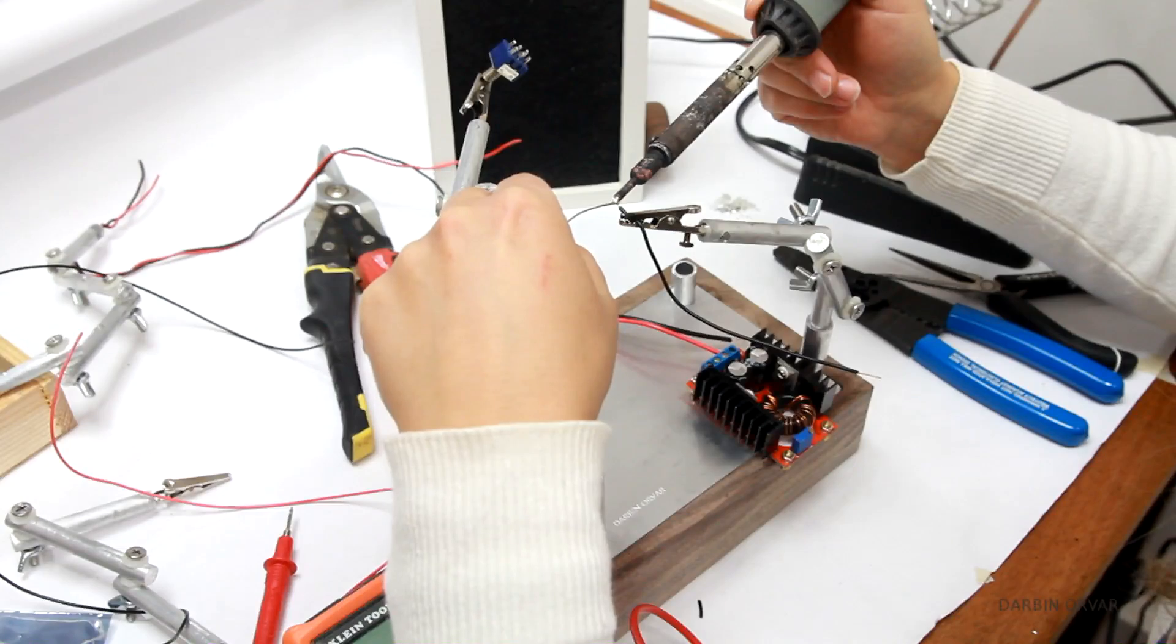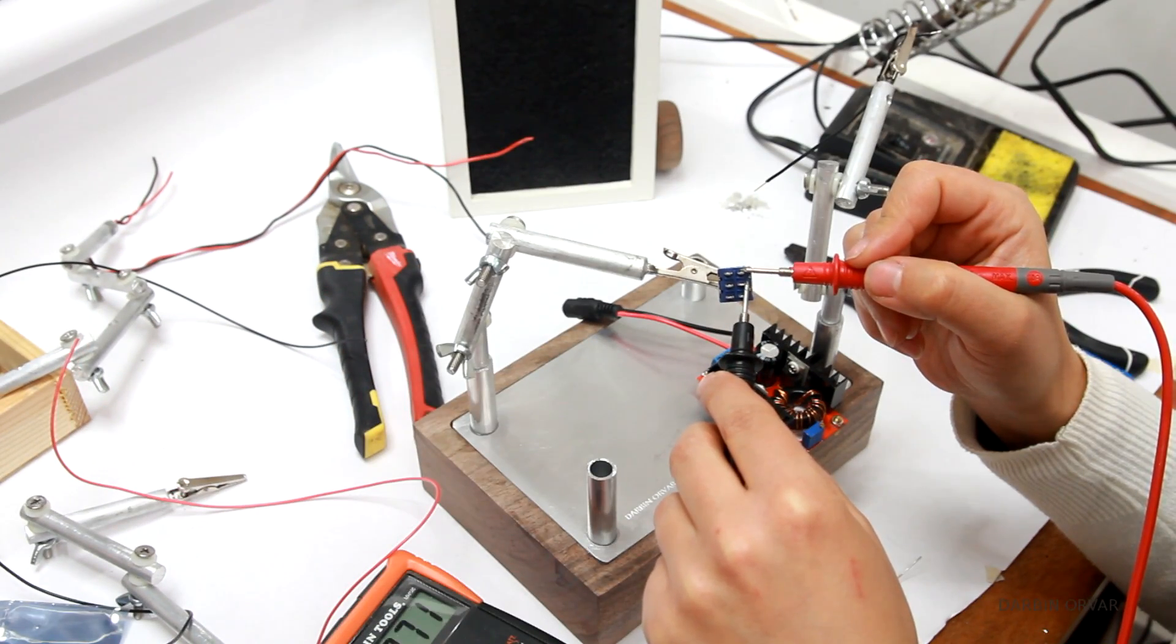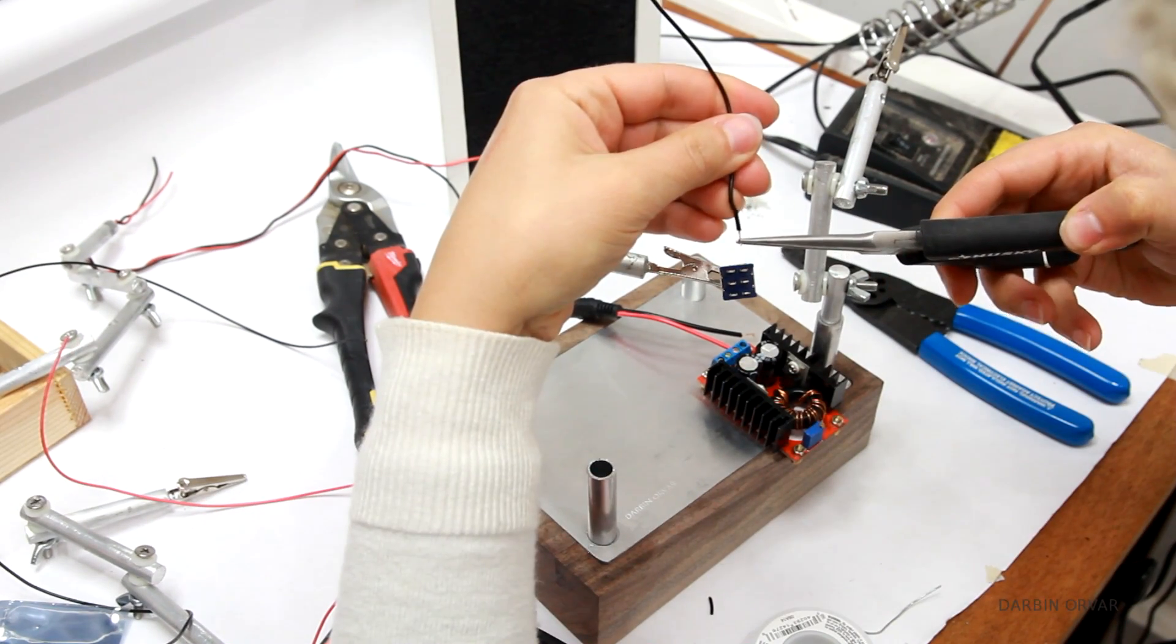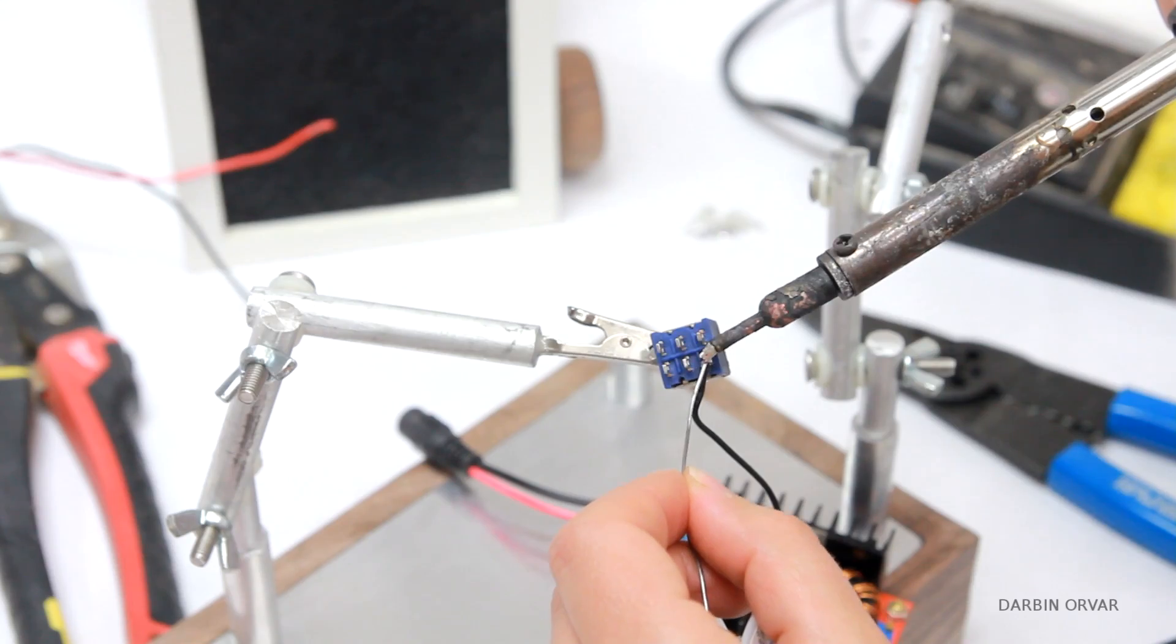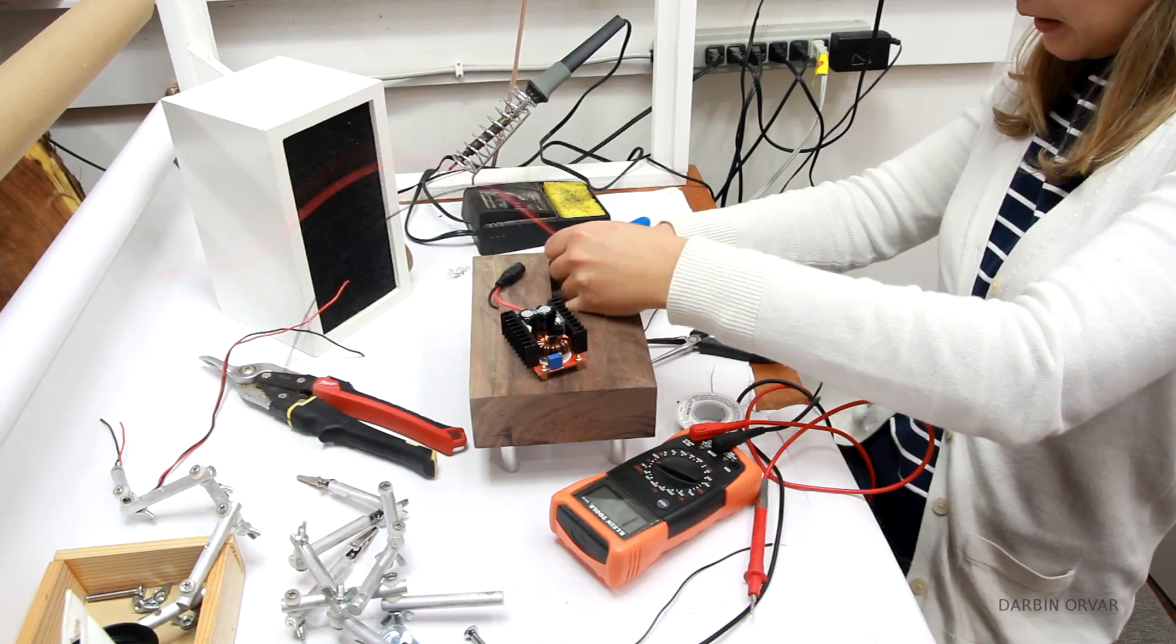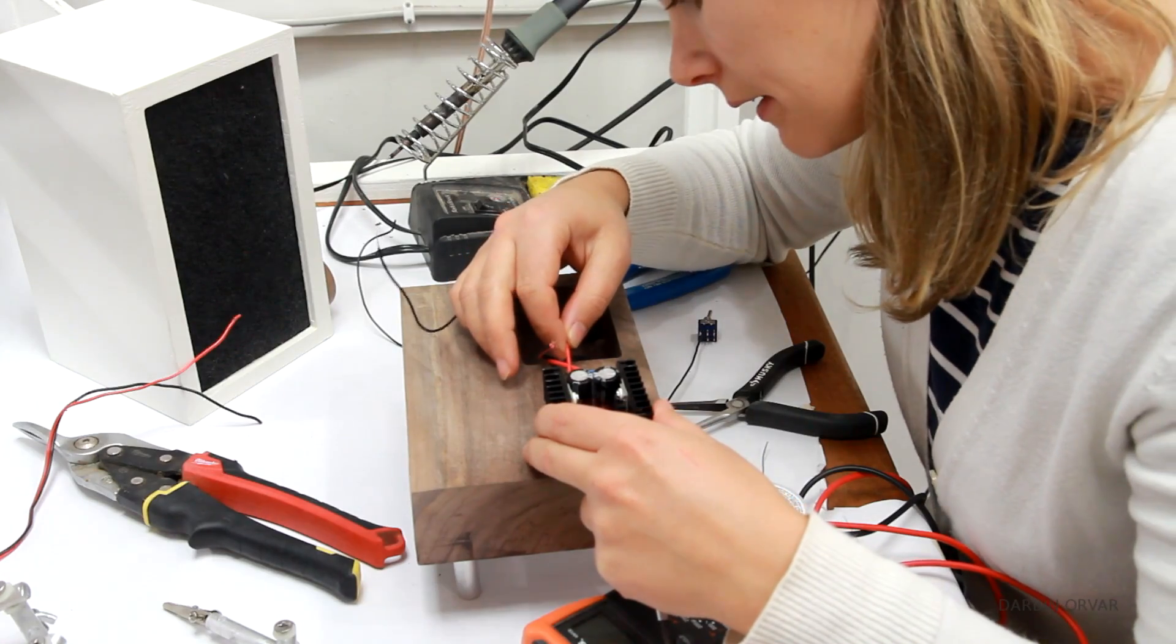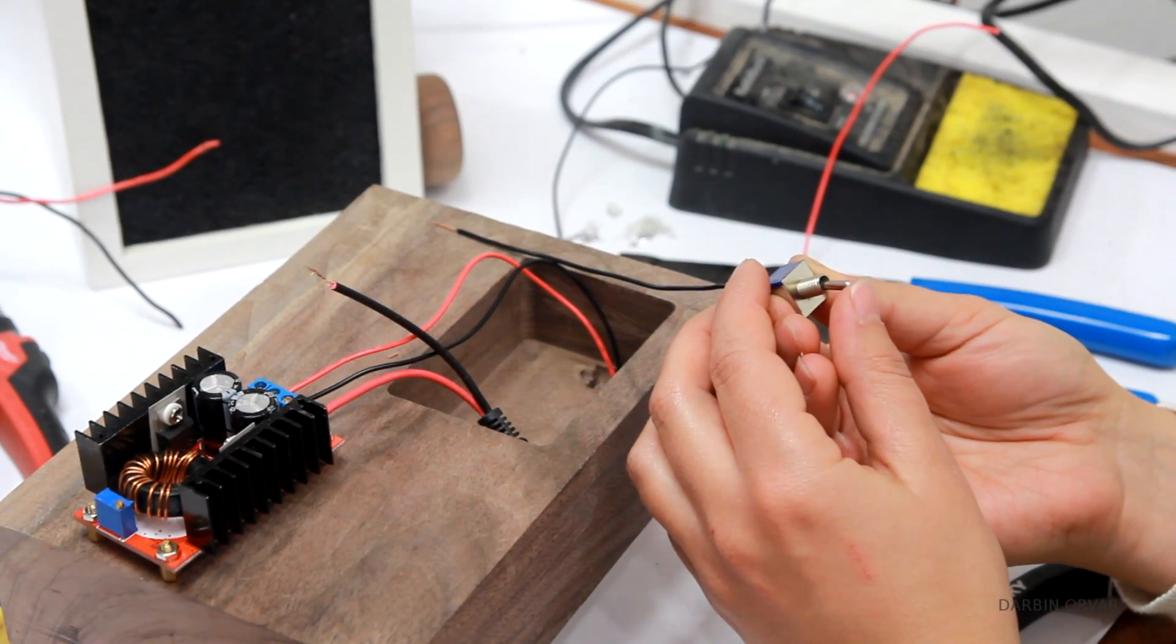So to connect everything first I'm tinning a wire with some solder. I'm using a continuity tester to see where to solder the power to on the switch. And then attaching the wire to the switch and soldering it in place. Now there's a hole drilled through the section where the light will go so I'm feeding some wires through that. And then I'm connecting them to the booster which will fit into this carved out area.